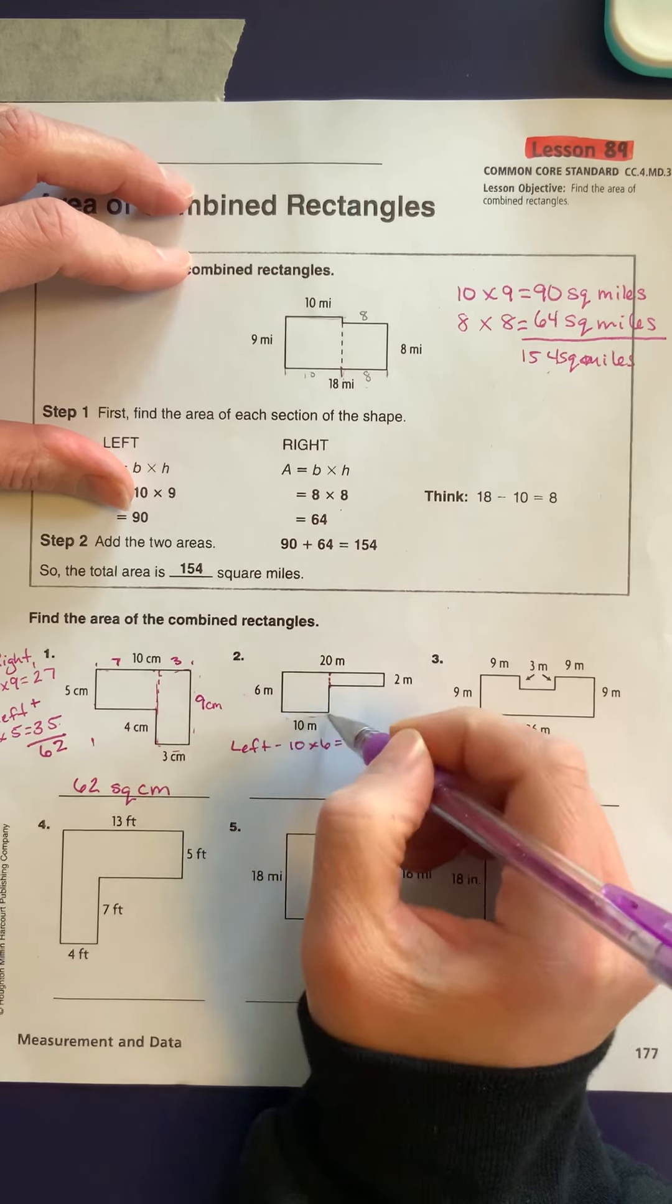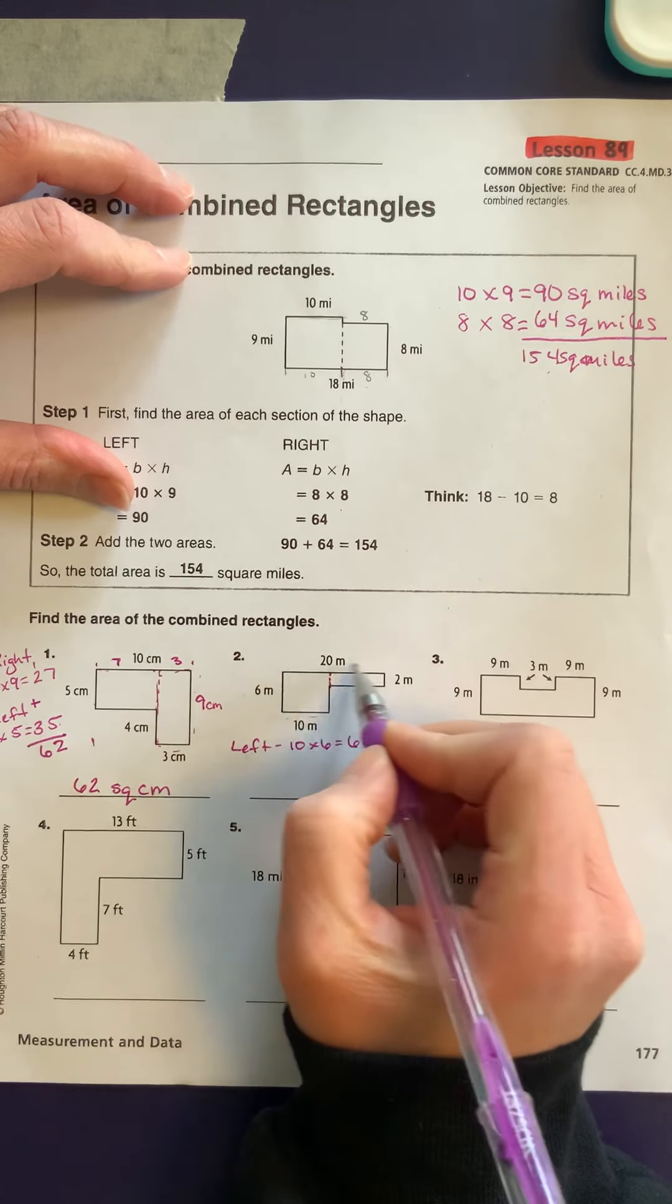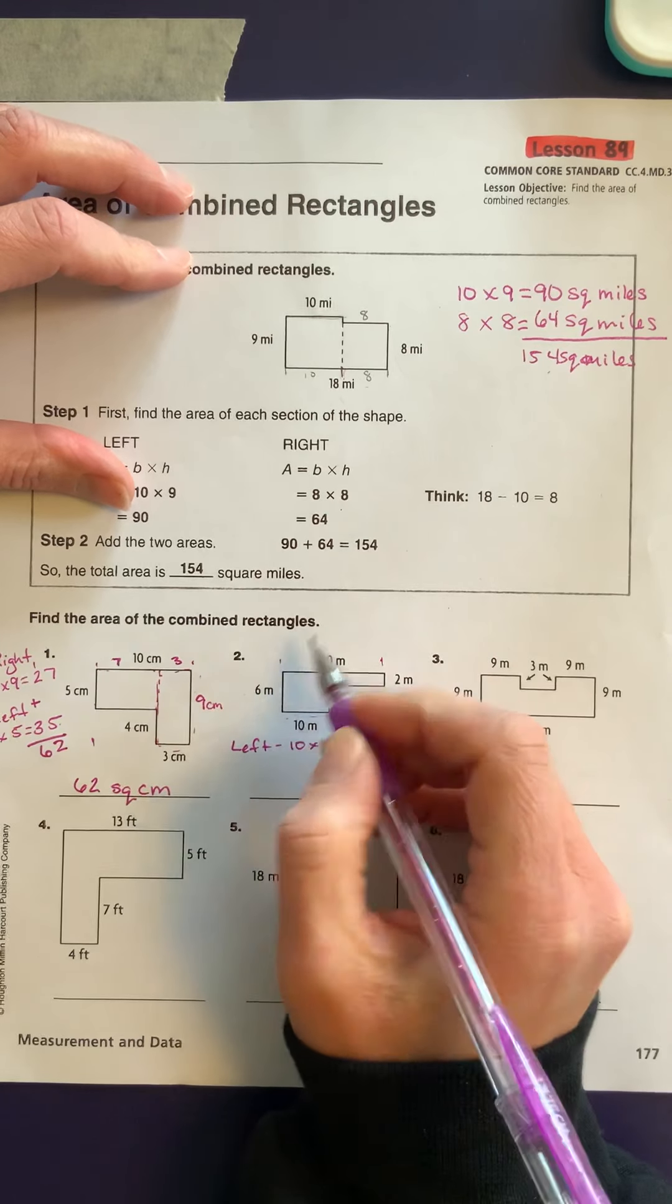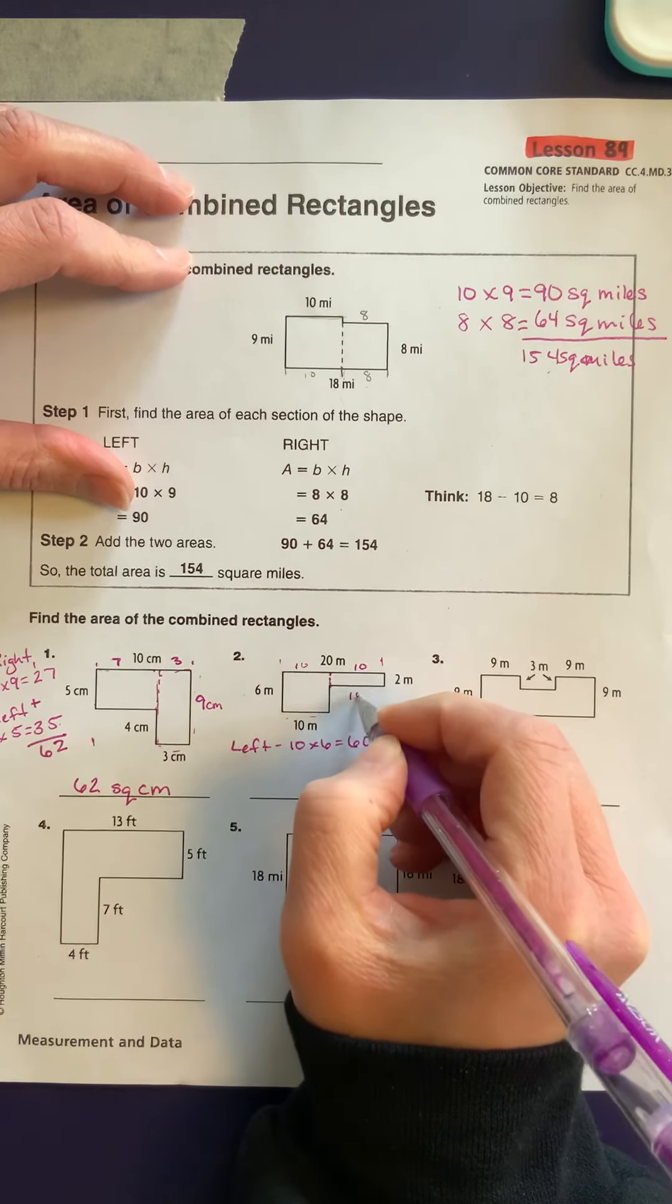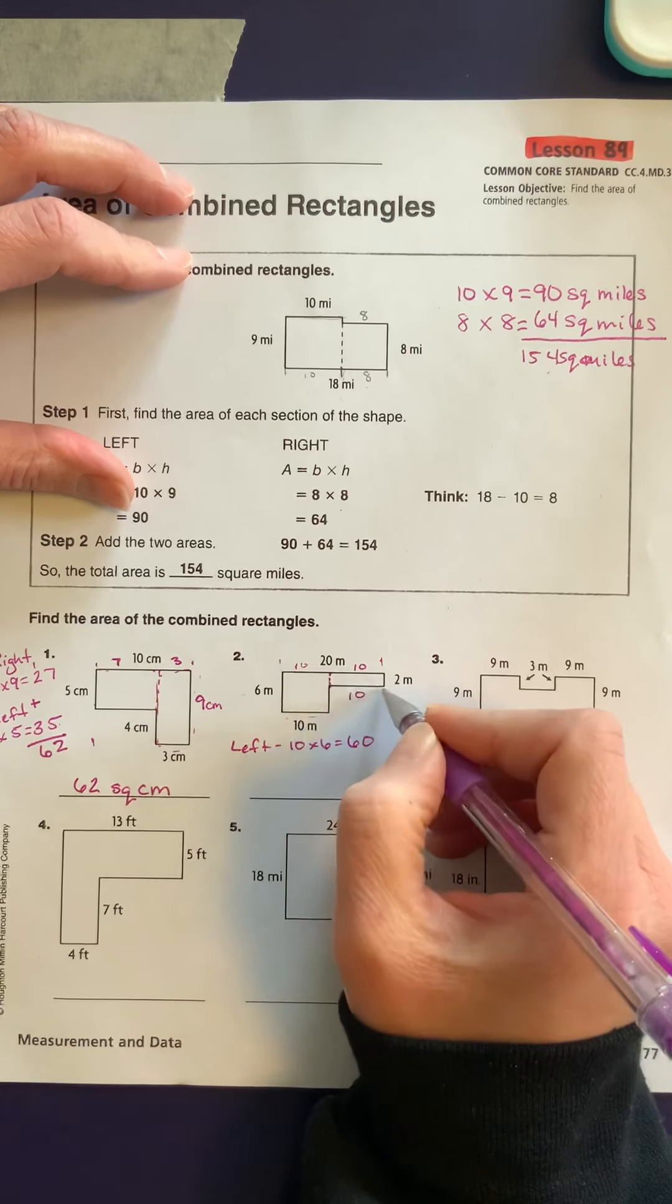And my rectangle on the right. So if this side is 10, and this side is a total of 20, this must be 10 as well. So it's going to be 10 times 2.